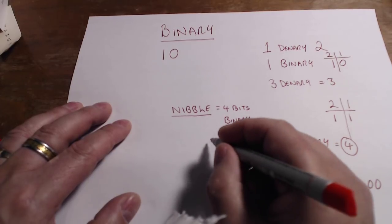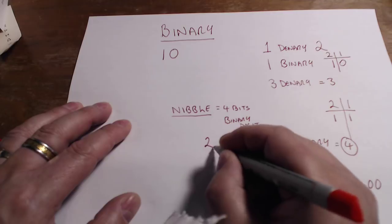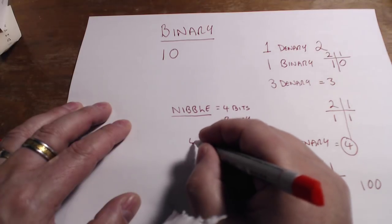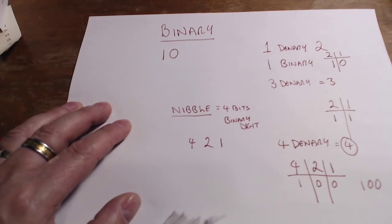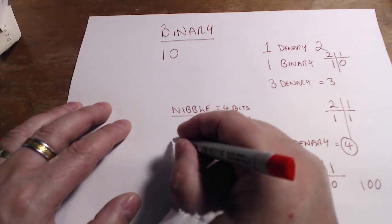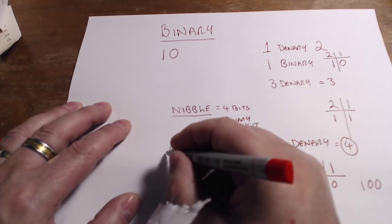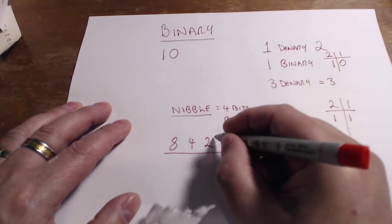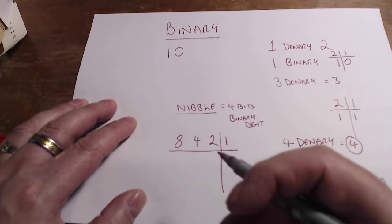So let's write out a nibble. We know that the right hand column is ones, second column is twos, then fours, and we know what the pattern is now—we double every time we go up a column, so it's eight.